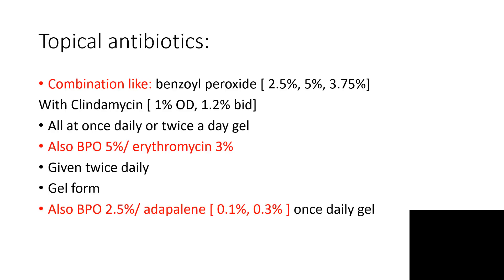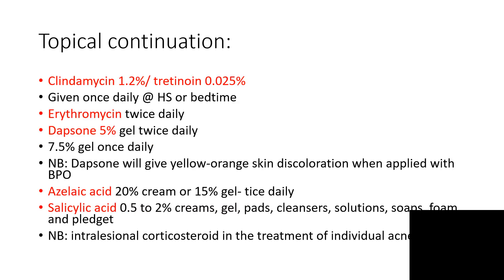Benzoyl peroxide 2.5%, 5%, or 3.75% and clindamycin 1% — once daily or twice daily. Or use twice daily depending on how severe the situation is. You can also use benzoyl peroxide and erythromycin as a once-daily gel. You can use clindamycin and tretinoin — give it only once a day, at the hour of sleep, at bedtime.